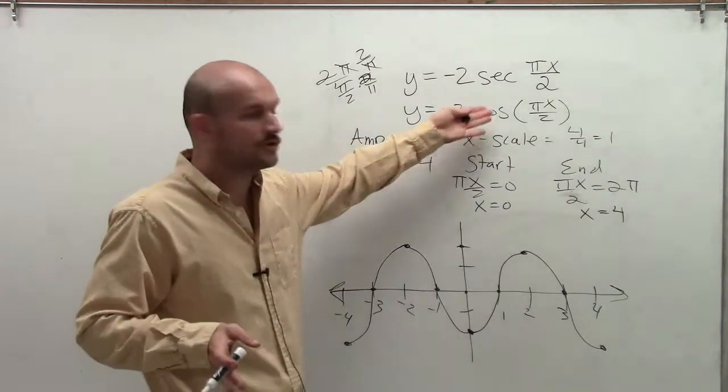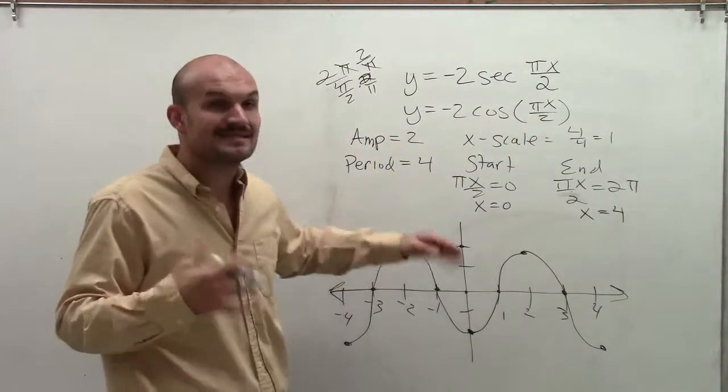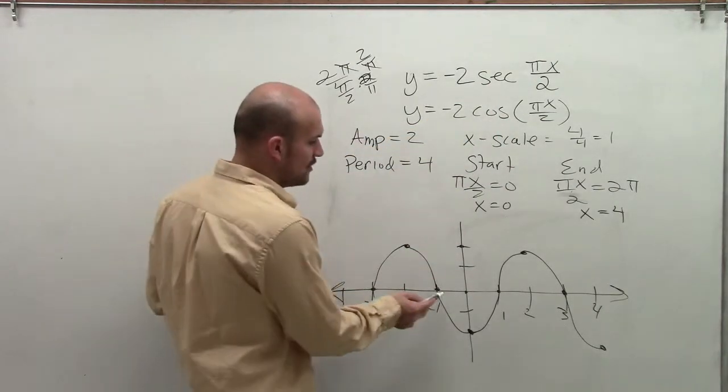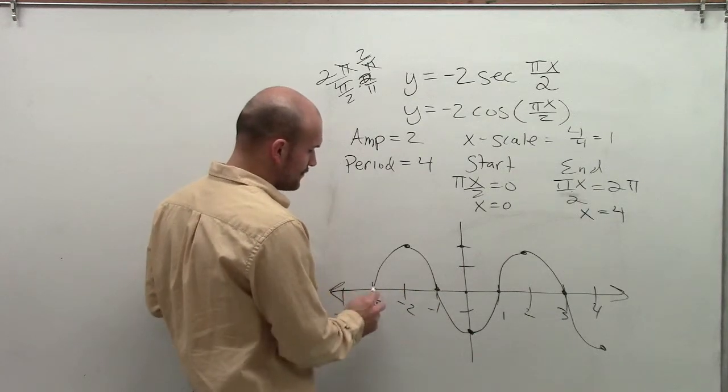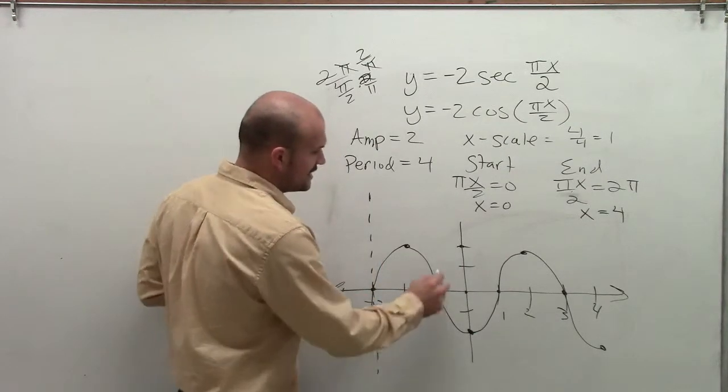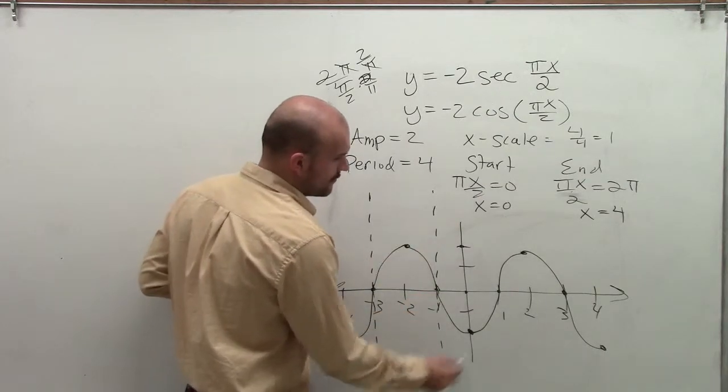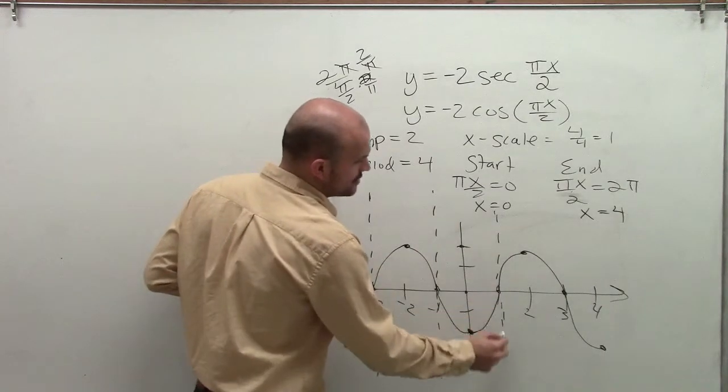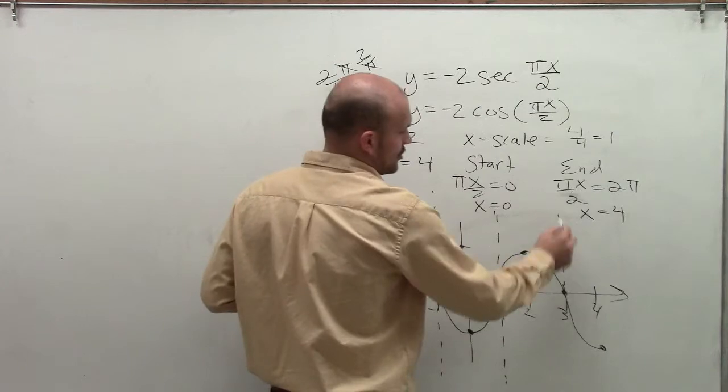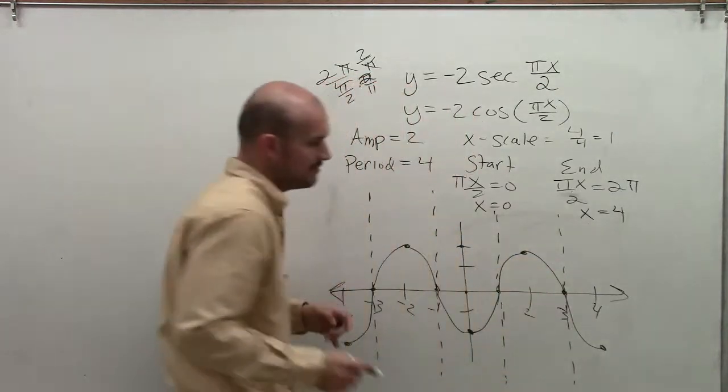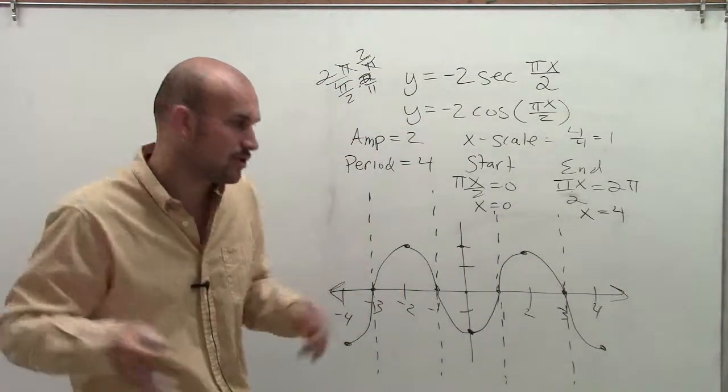Now remember, the secant graph is the reciprocal of this graph. So when we reciprocate all these points, we notice that when x is equal to 0, is now undefined for the secant graph. So I'm going to draw vertical dashed lines, which are going to represent my asymptotes of my secant graph, meaning the lines that my graph is going to approach.